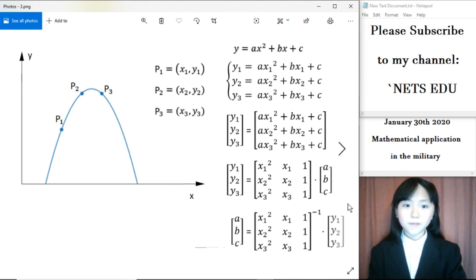What we want to find right now is what a, b, and c equals. And to find that, we need to multiply each side of this equation with the inverse of this matrix. So a, b, c equals the inverse of this times this matrix.